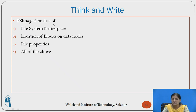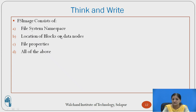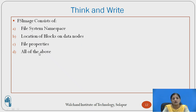FS image consists of the file system namespace, the location of blocks on the data node, file properties — or all three. As we have discussed, FS image consists of the complete file system namespace, the mapping of blocks to the various data nodes, and also the file properties. So the fourth option — all of the above — is the correct answer.